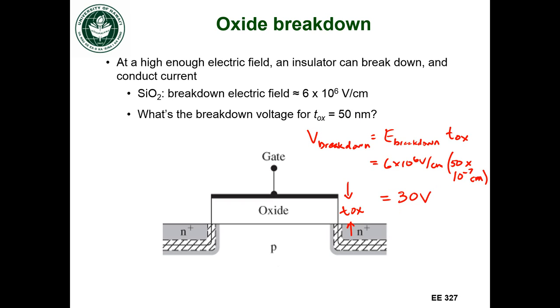So if our oxide is 50 nanometers, if I apply a gate voltage of 30 volts, I can get breakdown of the oxide.